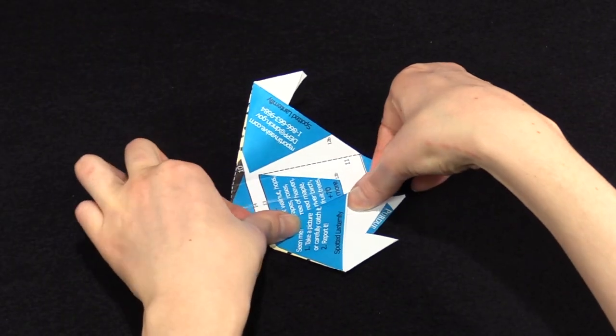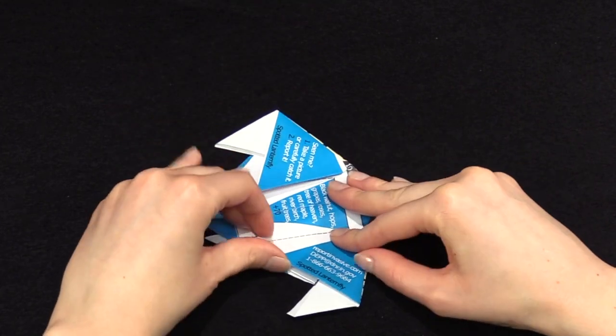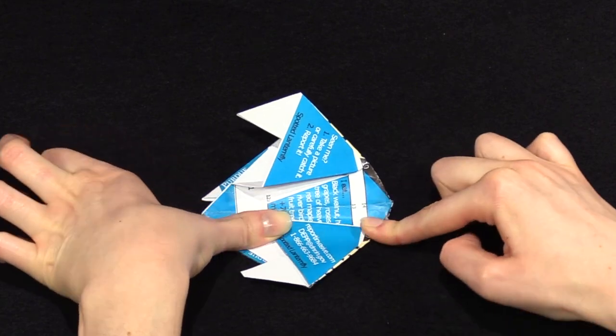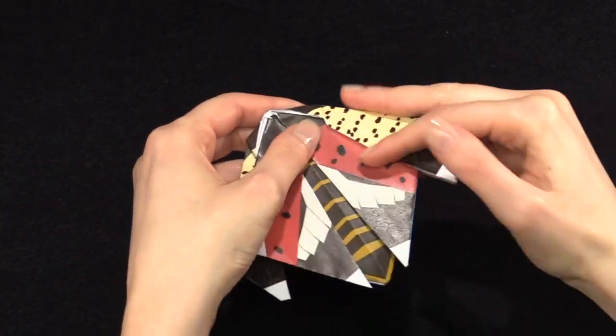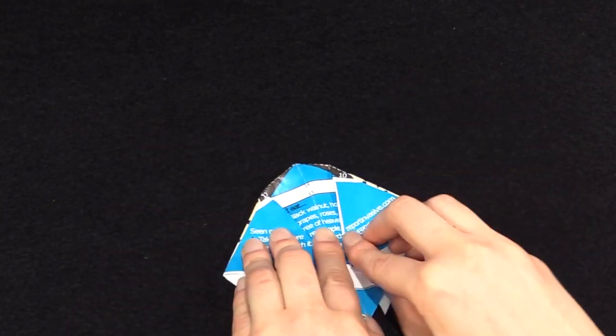Fold the top layer so that 12A and 12A match and then do the same with 12B and 12B. It helps to put your finger at the top of the fold to help guide it. You may need to flip your spotted lanternfly over and fix the wings. The pale yellow forewings should be on top.